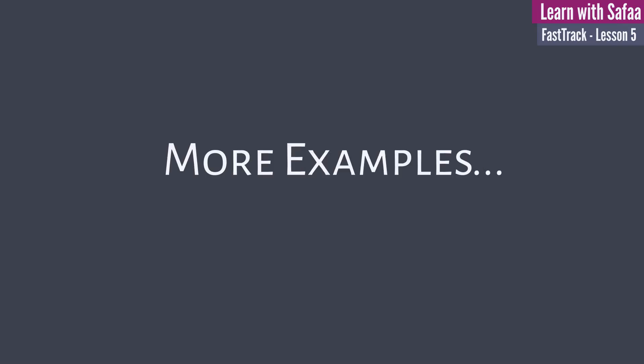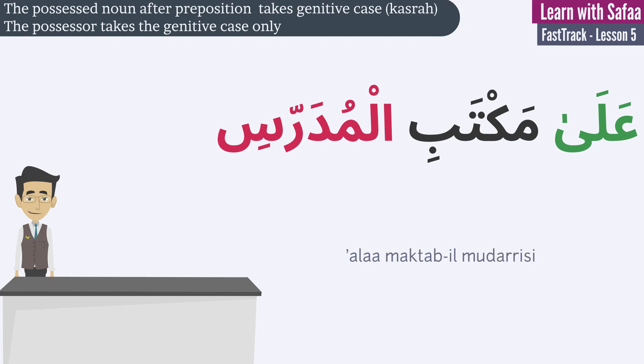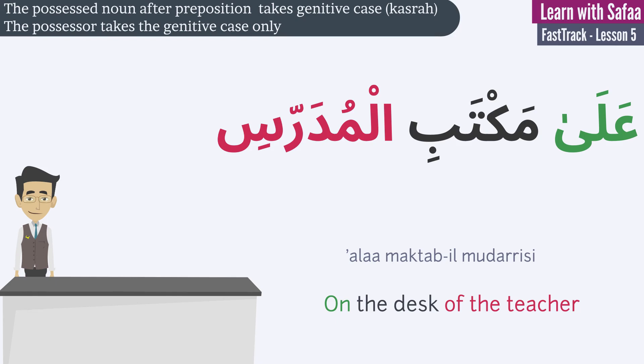Let's see some more examples. The first one: kitab-ul-talibi — the student's book. Here, kitab (book) is the possessed noun, and at-talibi (the student) is the possessor. The second one: ala maktab-ul-mudarrisi — on the desk of the teacher. Here, since the possessed noun is preceded by a preposition, it takes the genitive case, ending in a kasra.